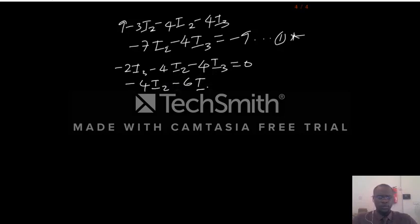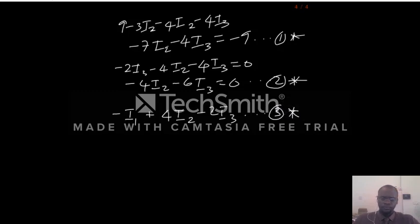By simplification, and then we can reduce to this. And then equation 3 can also be reduced to this: minus I1 plus 4I2 minus 2I3 equal to 0. This is equal to 0.